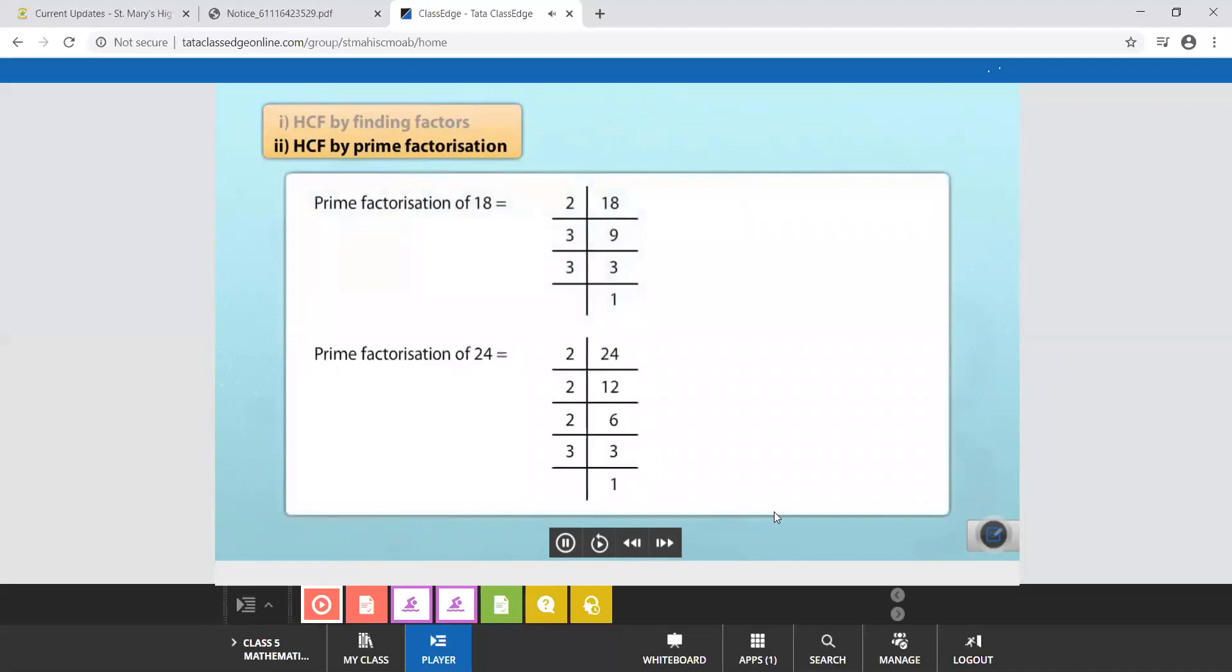we get 18 equals 2 into 3 into 3 and 24 equals 2 into 2 into 2 into 3. The common factors of 18 and 24 are 2 and 3. This means that the HCF of 18 and 24 is the product of 2 and 3 which is 6.